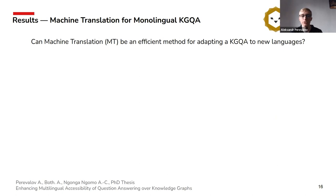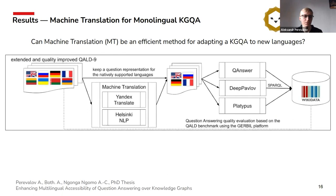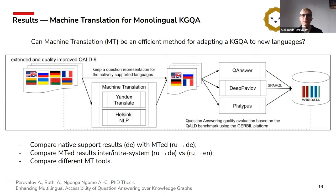One very important work is the paper on machine translation for knowledge graph question answering, which we will present at the Web Conference on Friday. This paper answers the research question: can machine translation be an efficient method for adapting knowledge graph question answering to new languages? To answer this, we took our dataset and three famous question answering systems natively supporting English, Russian, German, and French. We also used machine translation tools to help these systems answer questions in unsupported languages, and we wanted to observe to which language it is better to translate — for example, is it better to translate Ukrainian to Russian since they are from the same language family?